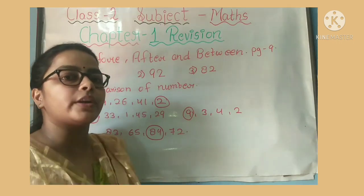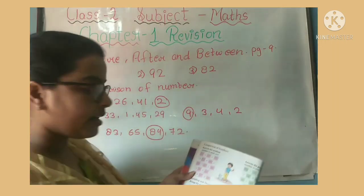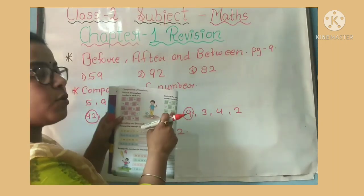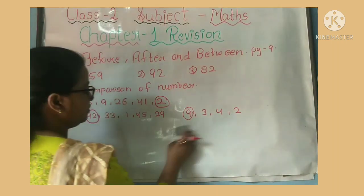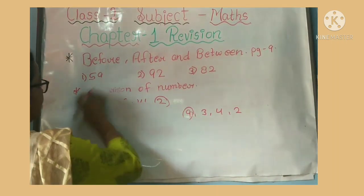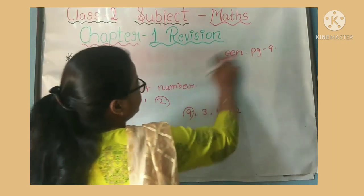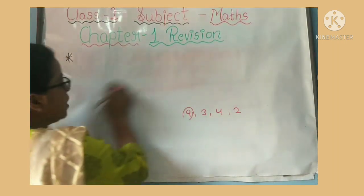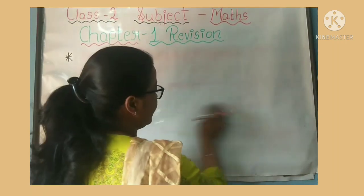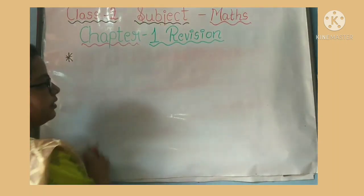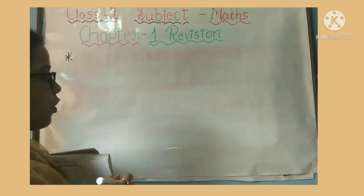We need to compare the numbers and revise them. Clear? The next exercise: Ascending and Descending Order. Next exercise — Ascending and Descending Order.